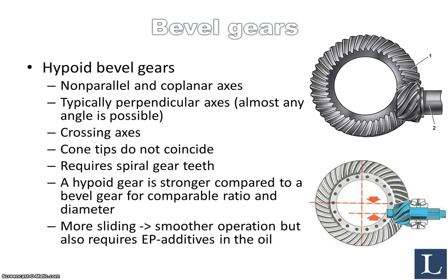When it comes to hypoid bevel gears, the axes are non-parallel and co-planar. Typically the axes are perpendicular, but almost any angle is possible. The axes cross each other, but the cone tips in this case do not coincide. For this to work, we require spiral gear teeth, as shown right here.